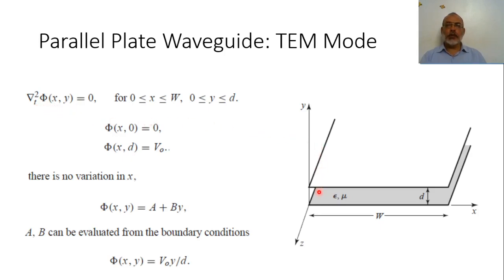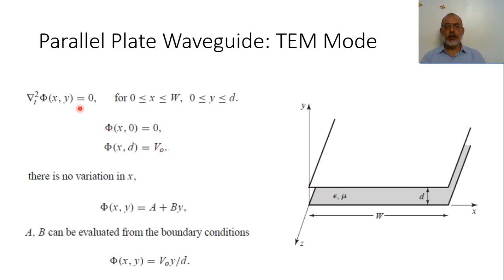In the present case, the boundary conditions are: the potential at the lower plane — at any point x, y equals zero — is zero. And the potential at the upper plane, at y equals d, equals V₀. So this is the Laplace equation and these are the boundary conditions.